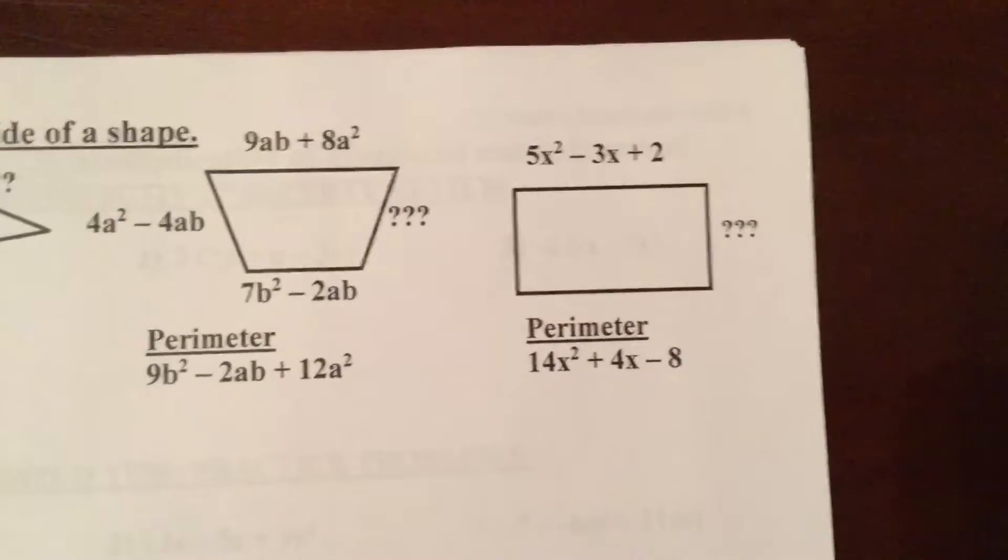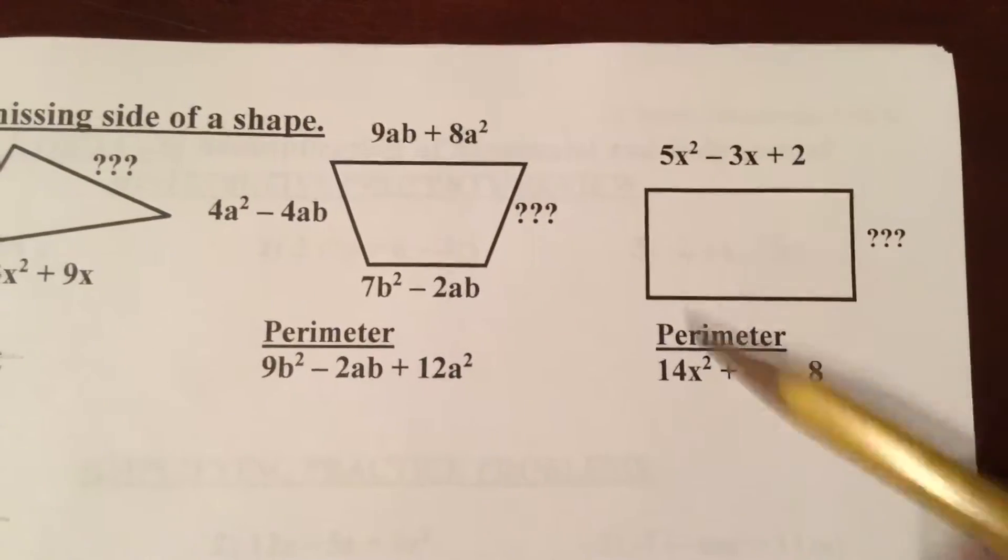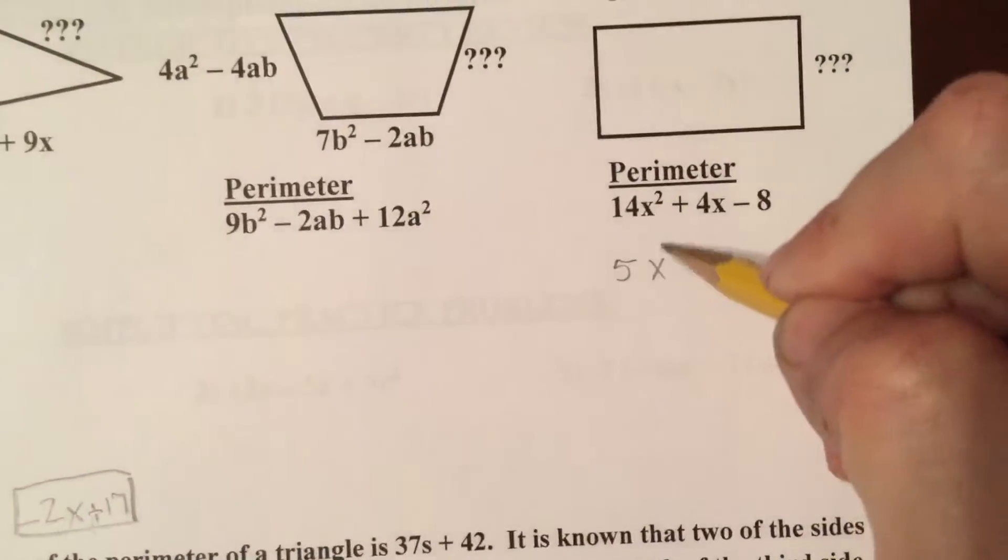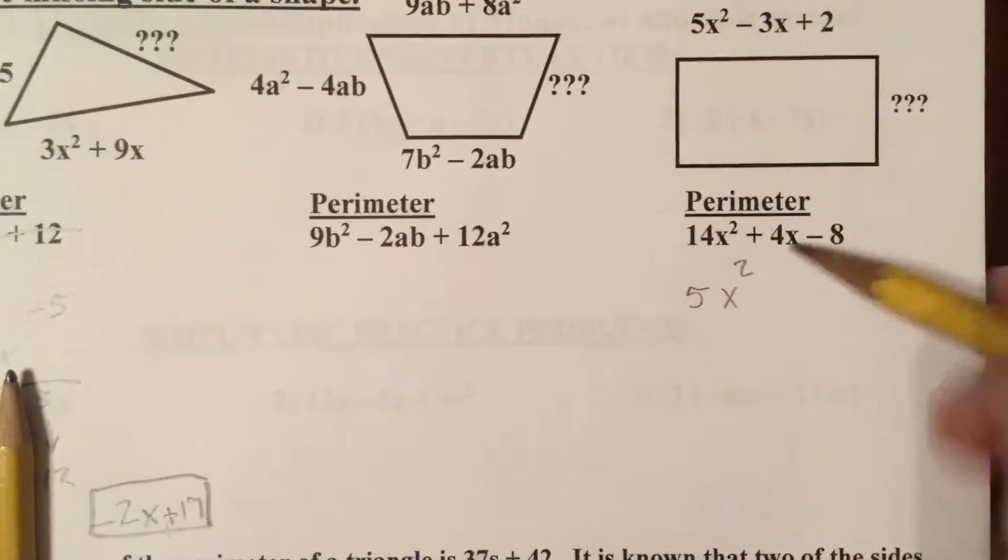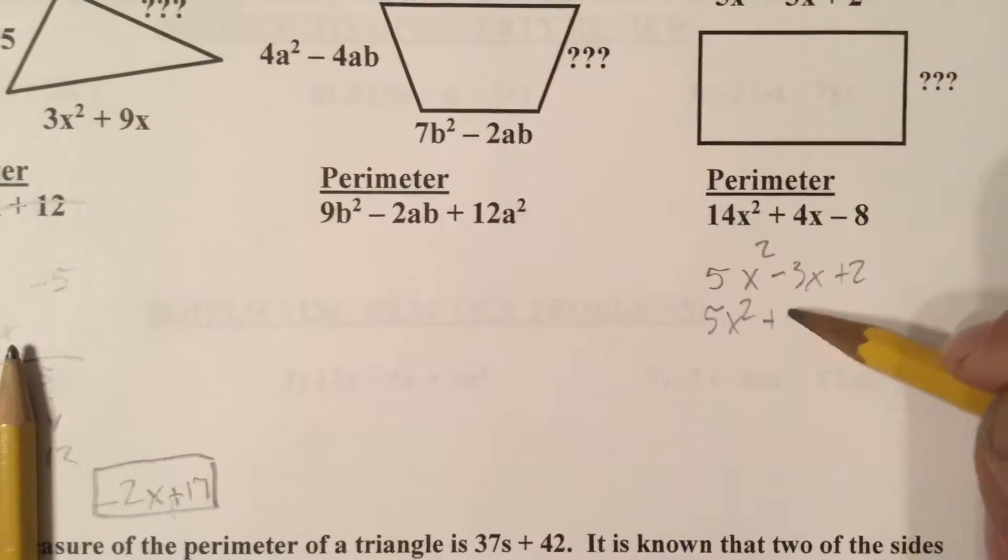Now to find the perimeter of a rectangle when we're missing a width or a length, first I know that the perimeter is to add all four sides. I know that each of my lengths is 5x squared minus 3x plus 2.